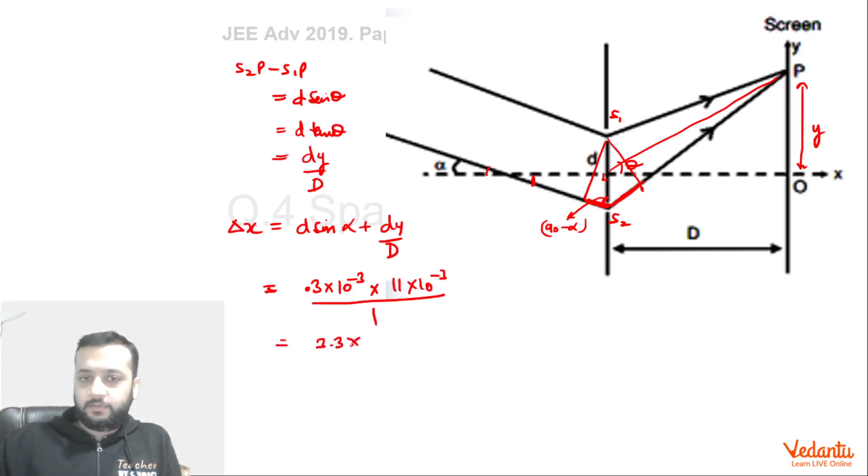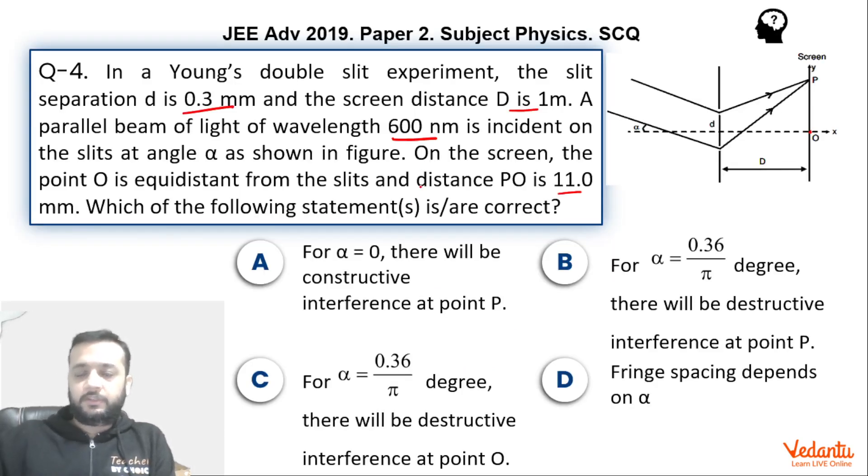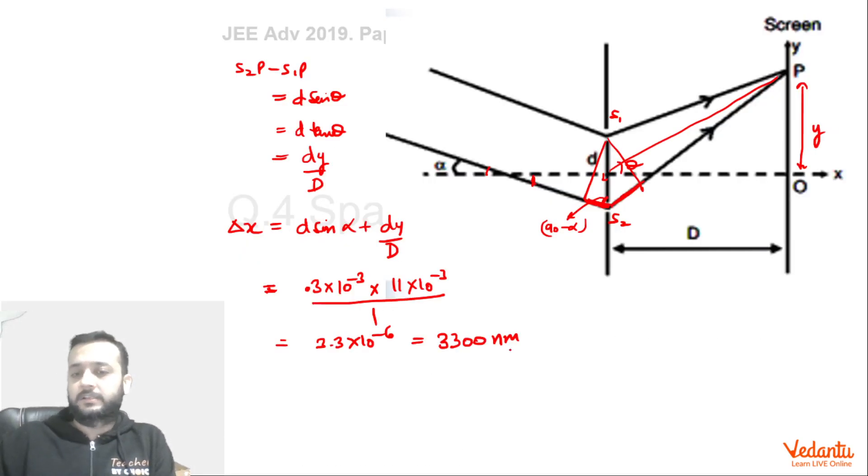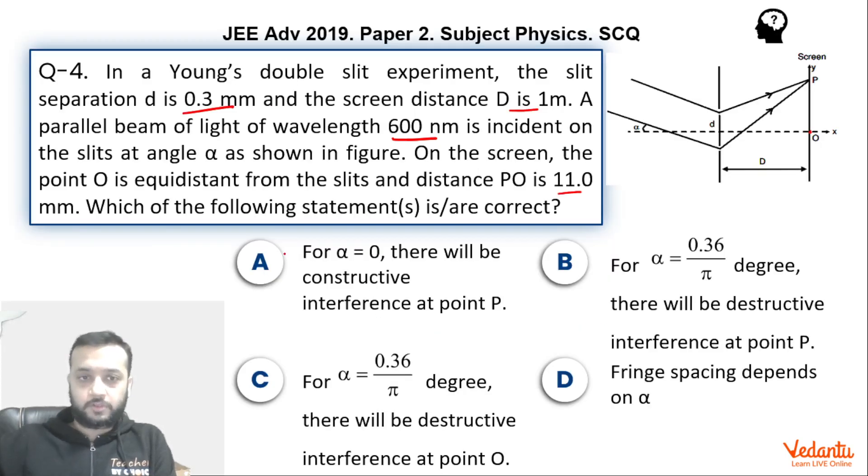So this becomes 3.3 into 10 to the power minus 6, or we can say that this will become 3300 nm. Now, if you see the wavelength of the light, it is 600 nm, so which is nothing but 5.5 lambda. Which means that this is a destructive interference, because this is 5 lambda plus lambda by 2. Which means it is a destructive interference. So of course, option A is wrong.